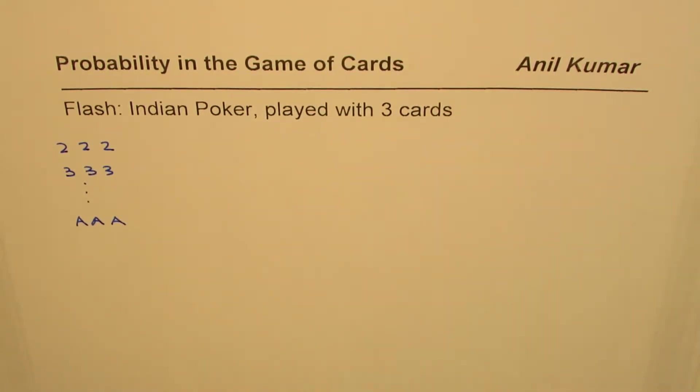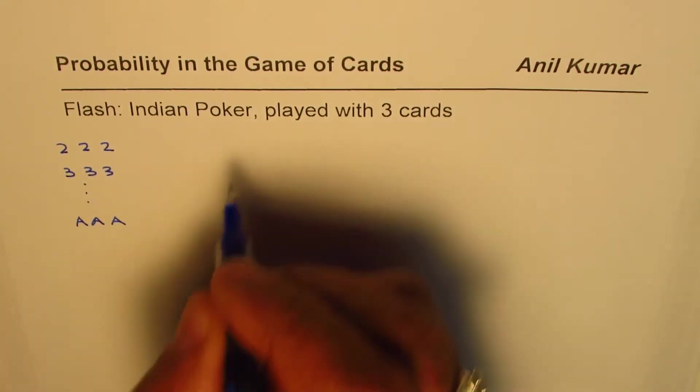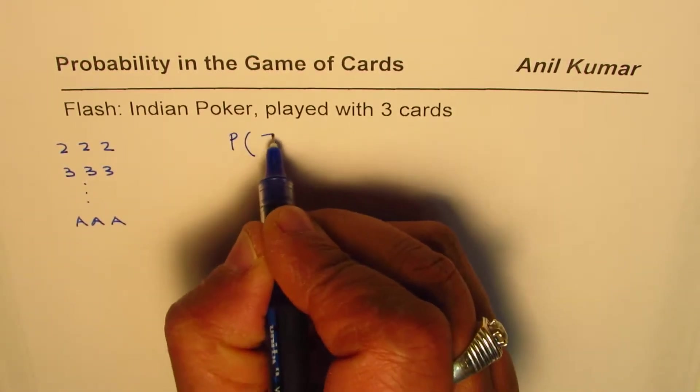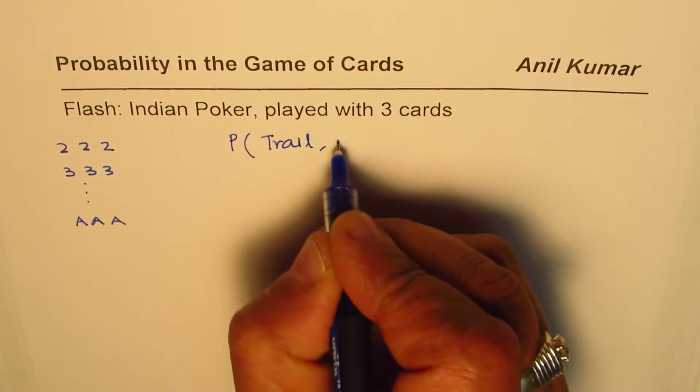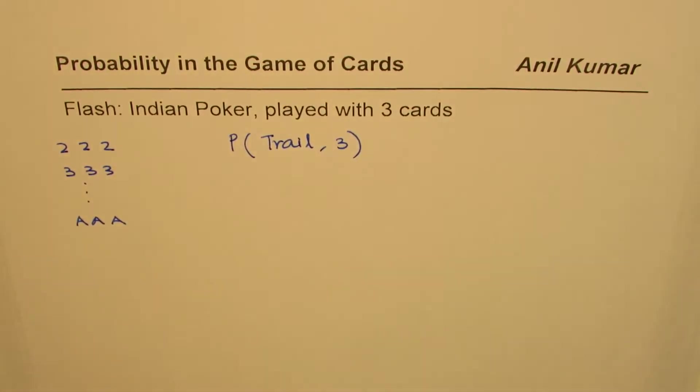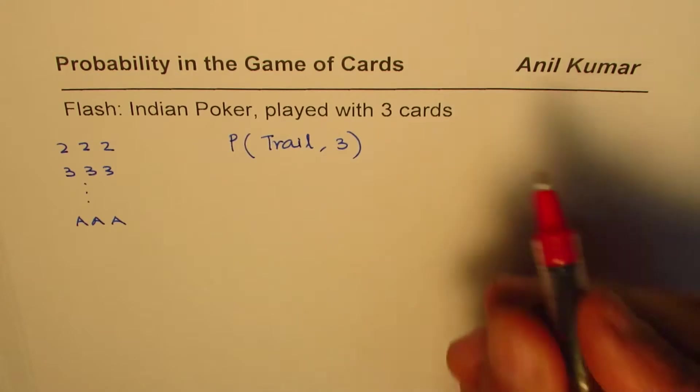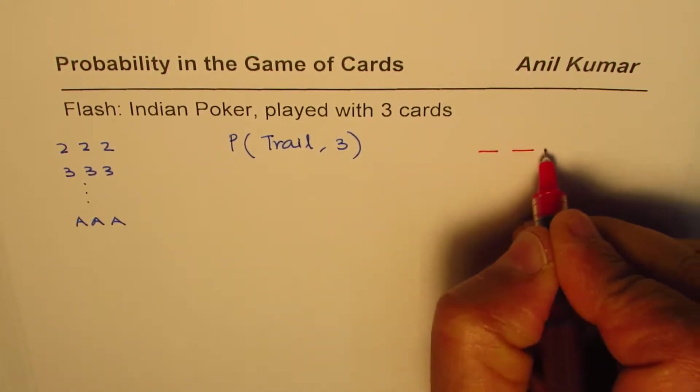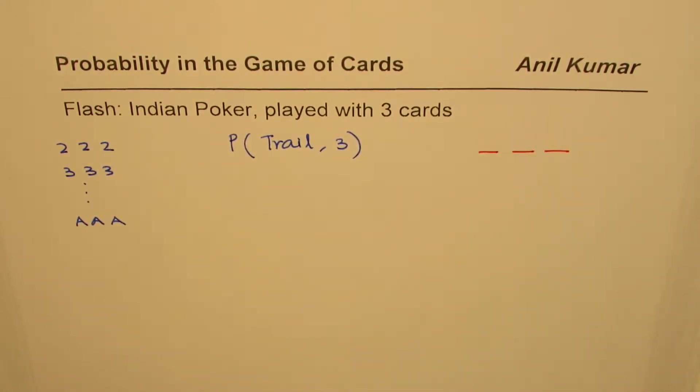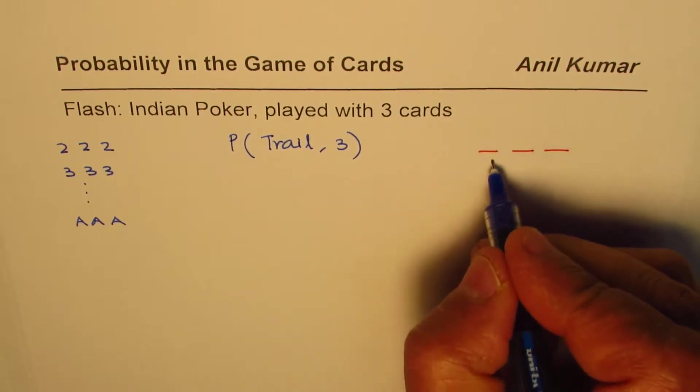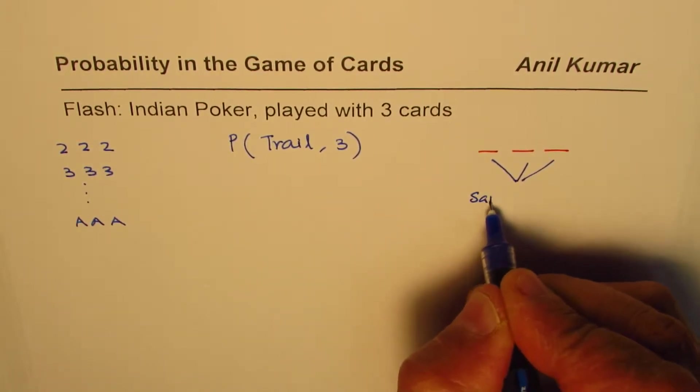In this video we'll discuss the probability of getting trail when three cards are being distributed. We are distributing three cards and we want all three of the same kind or same value. We need same value cards - that is what we understand by the word trail.